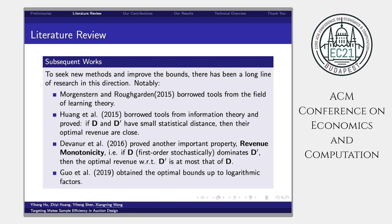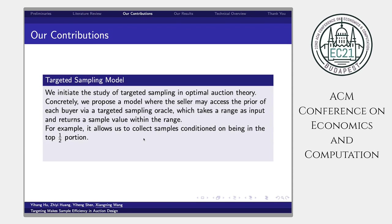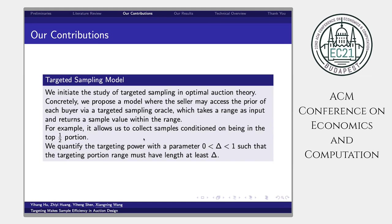Our contribution is to introduce a new model called targeted sampling model. We initiate the study of targeted sampling in optimal auction theory. Concretely, we propose a model where the seller may access the prior of each buyer via a targeted sampling oracle, which takes a range as input and returns a sample value within the range. For example, it allows us to collect samples conditioned on b in the top y over 2, y over 3 portion. We quantify the targeting power with the parameter delta in between 0 and 1, such that the targeting portion range must have length at least delta.